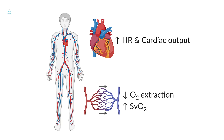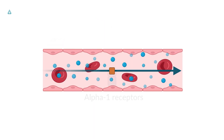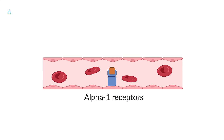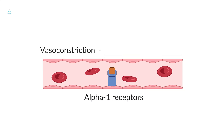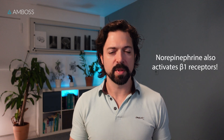This is where norepinephrine can help. Its primary mechanism of action is activating alpha-1 receptors, causing vasoconstriction and increasing SVR (afterload) to counter the effects of sepsis. Despite the increased afterload, cardiac output typically remains stable as beta-1 inotropy increases to compensate.